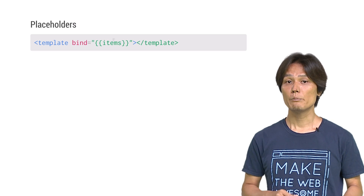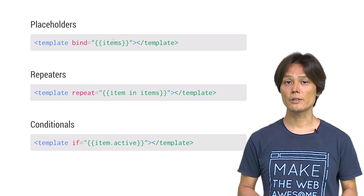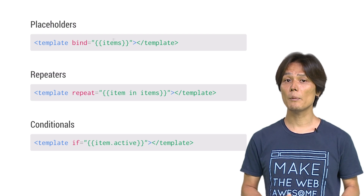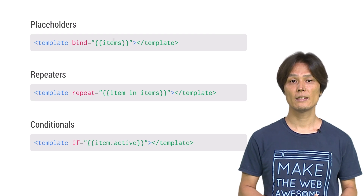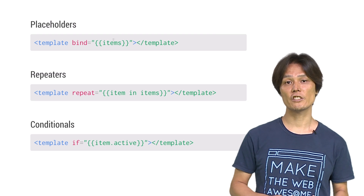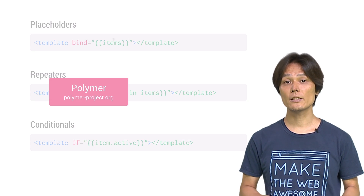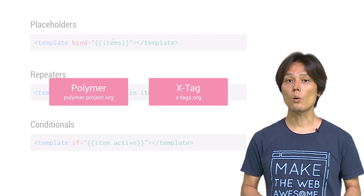One thing to note is that the template itself is simply a container for markup. You might expect to have things like placeholders, repeaters, or conditionals, but they are not part of the template element standard. If you want to use those advanced features, I recommend using web components frameworks such as Polymer or X-Tag.